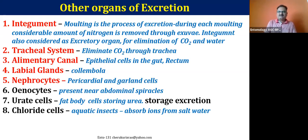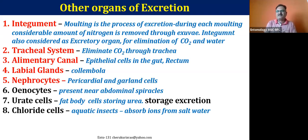Nephrocytes, which are just below the integument, have some duty in capturing metabolic wastes and play a wonderful role in excretion. Oenocytes are present near the abdominal spiracles. Urate cells and fat body cells store urea. These different kinds of cells — nephrocytes, oenocytes, urate cells, chloragogen cells — they try to store metabolic waste for some time. Sometimes these cells are shed out at the time of the moulting process, or sometimes they store it forever until death.